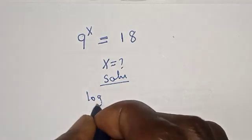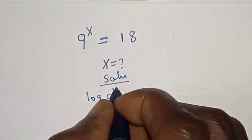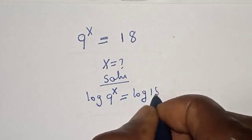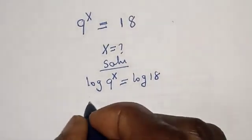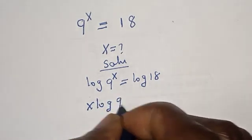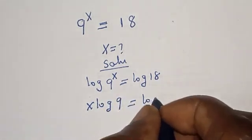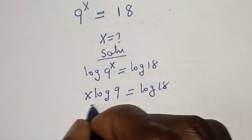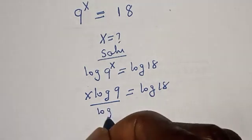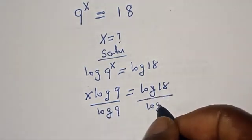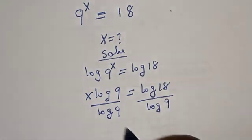Log 9 to the power of x is equal to log 18, and we have x log 9 is equal to log 18. Divide both sides by log 9. Divided by log 9, this one will cancel.